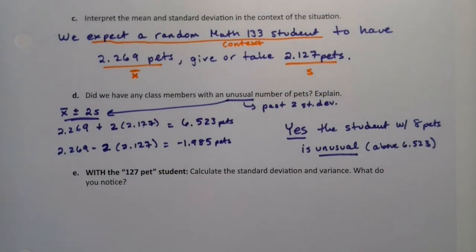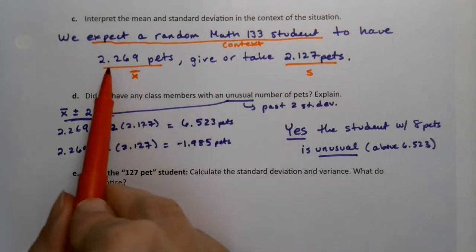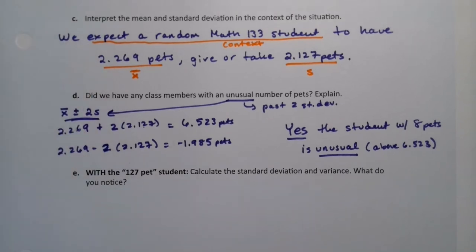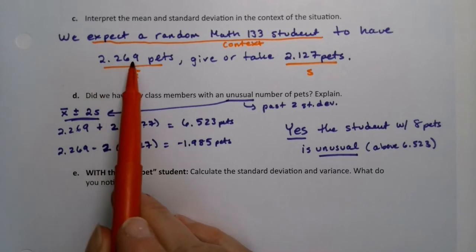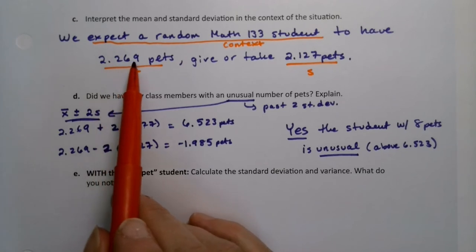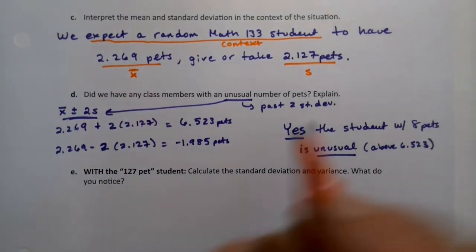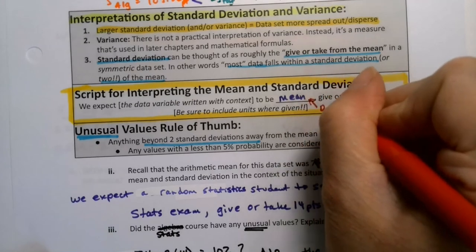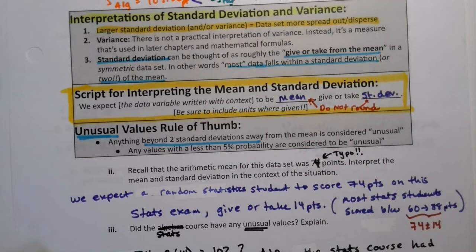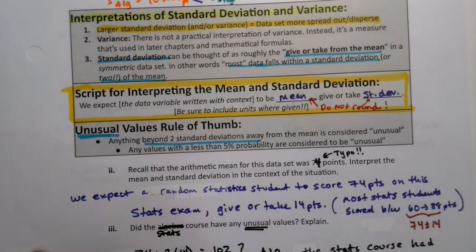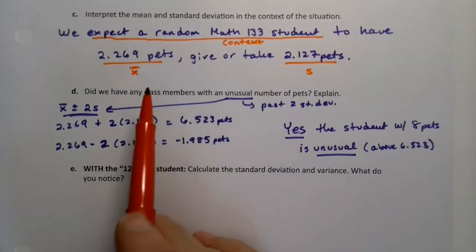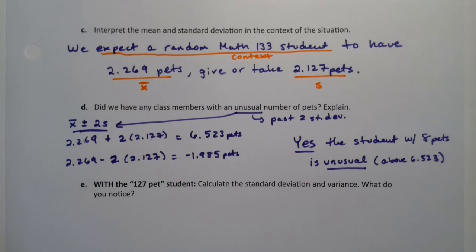One other comment before I go any further. You'll notice that we leave the decimal places in. I know what you're thinking. A random student cannot have .269 of a pet. That's true, but that's not really what we're talking about. What we're talking about is an average overall. So if you had 10 students, you'd expect 22.69 pets. And if you had 100 students, you'd expect 226 pets. So you don't round these, you leave them with their decimal places.